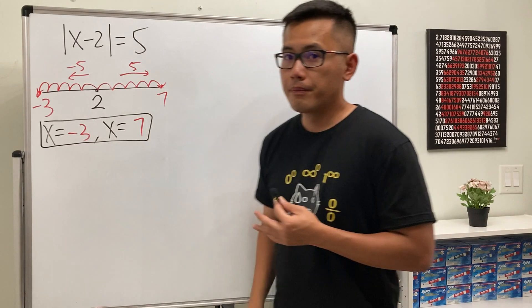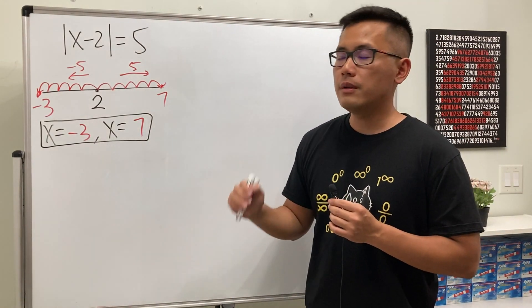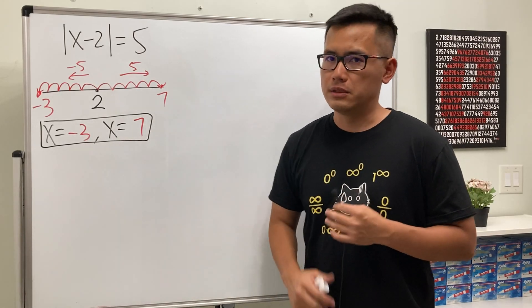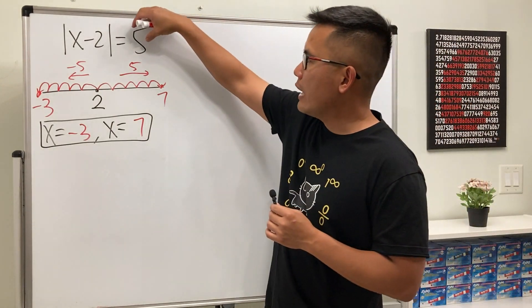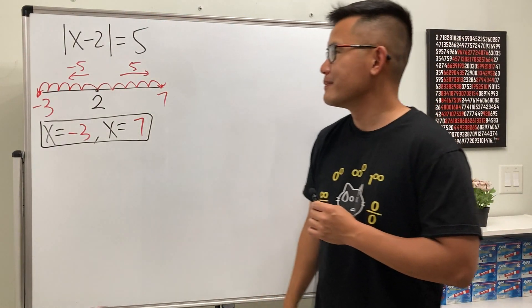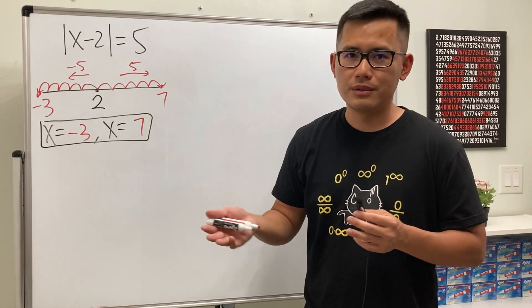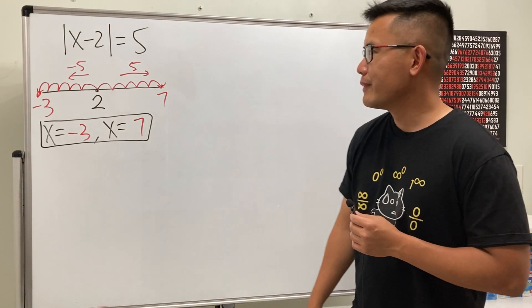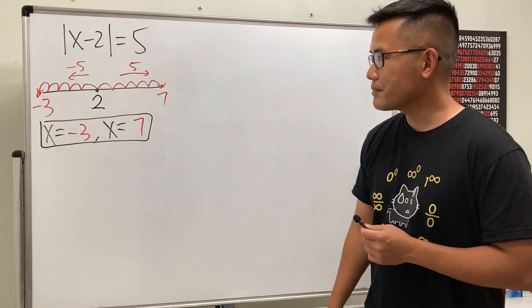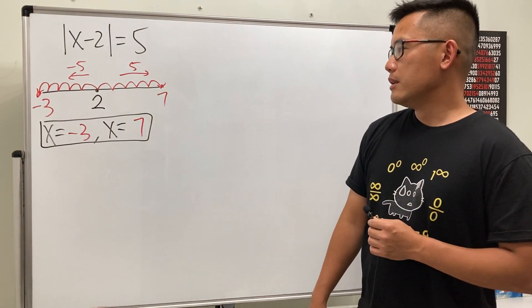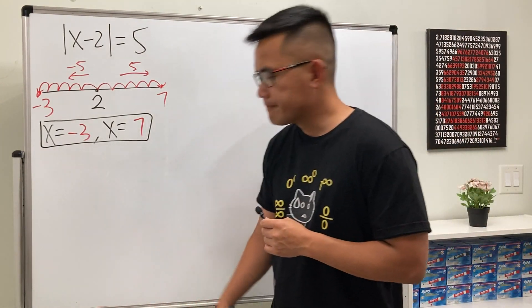This explains why an absolute value equation usually has two answers. The only time we get one answer is when we have zero on the right-hand side, because the only way to not move is to stay there. If you have a negative number on the right-hand side, you have no solutions.